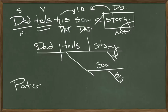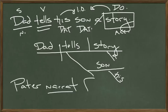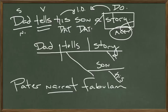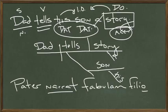And now in Latin. Pater narrat — narrat is 'tells' in Latin; that's where we get narrative, narrate, narration, narrator. Pater narrat fabulam — fabulam is accusative, the direct object; that's where we get 'fabulous' and 'fable.' Now all we need is 'to his son' in the dative case. We change filius to filio: filio suo. Pater narrat fabulam filio suo.